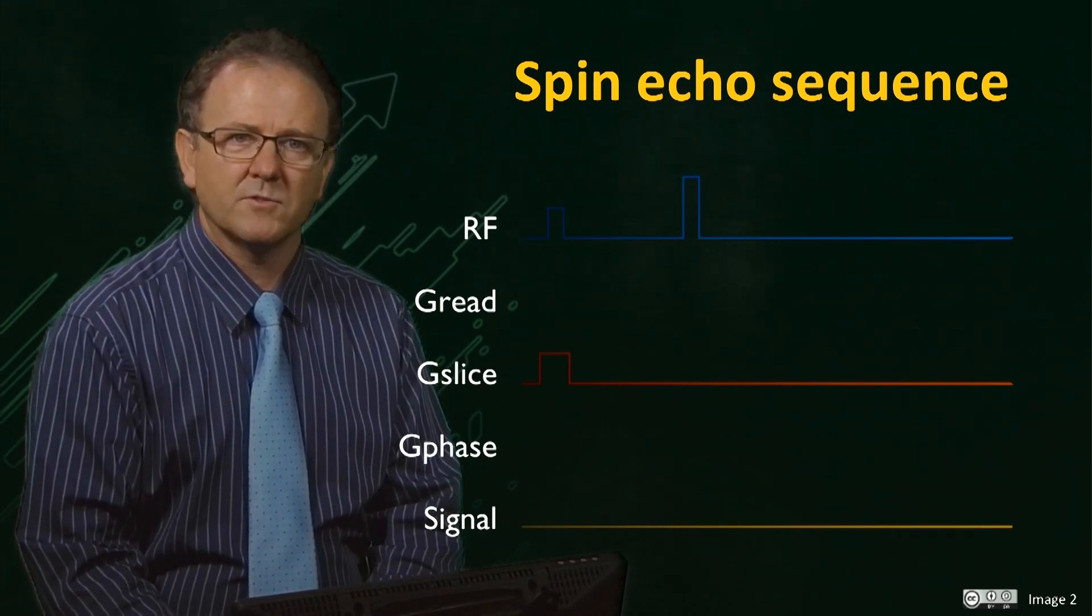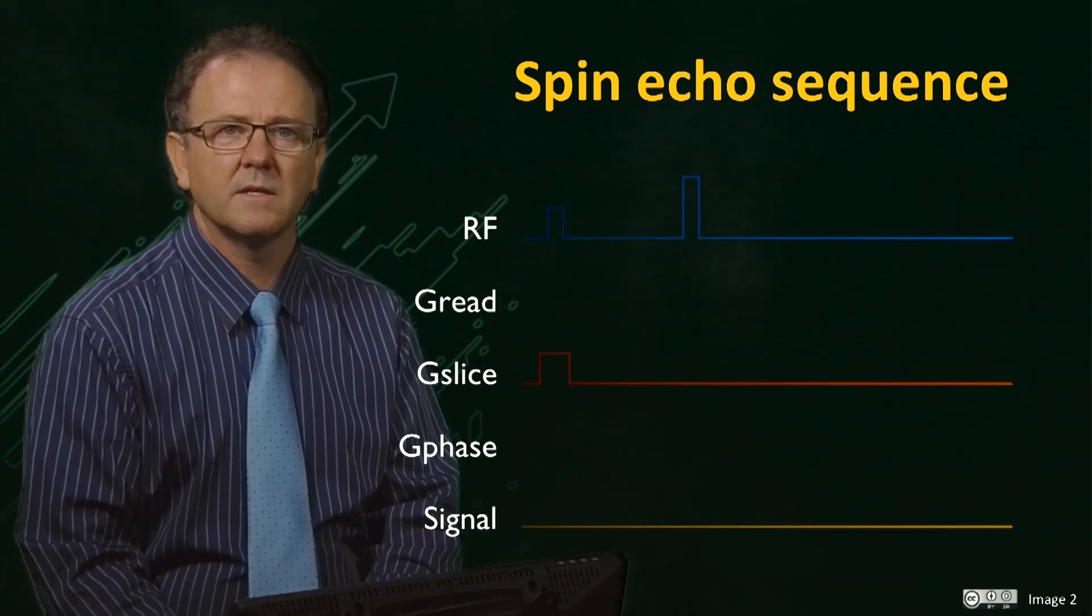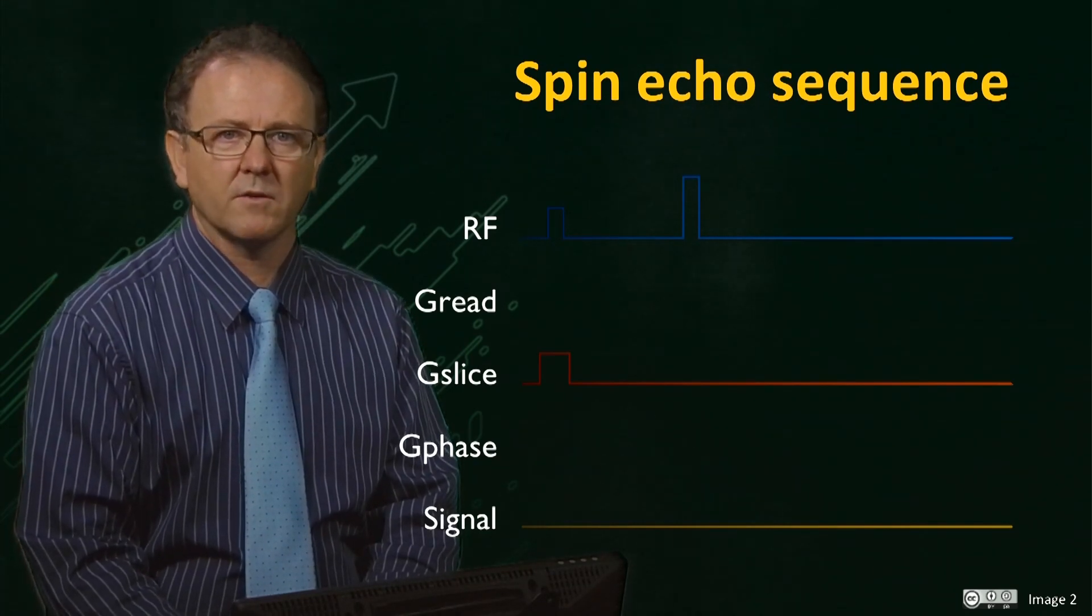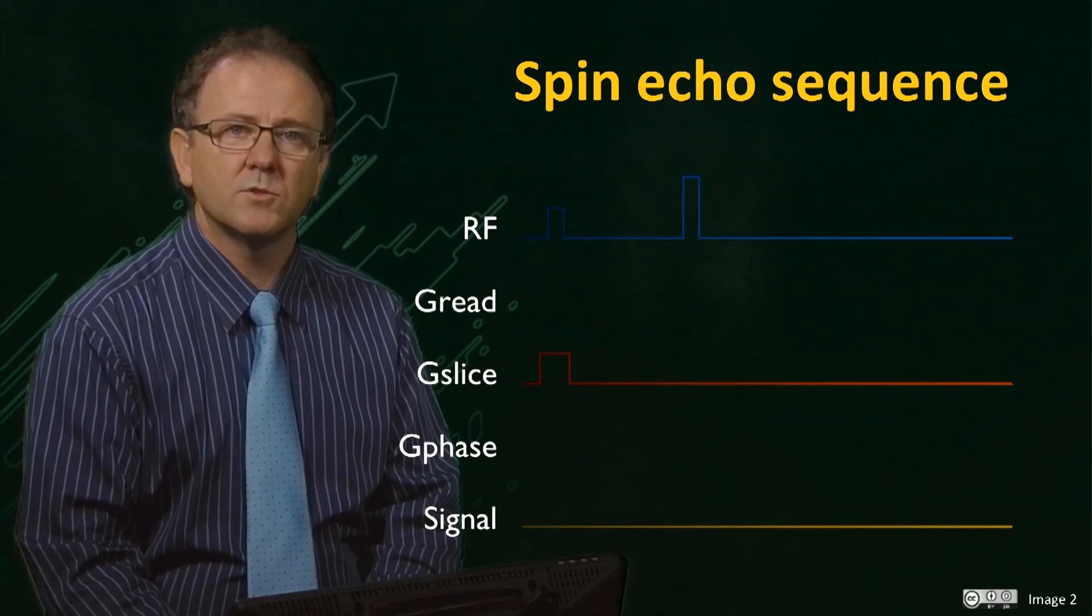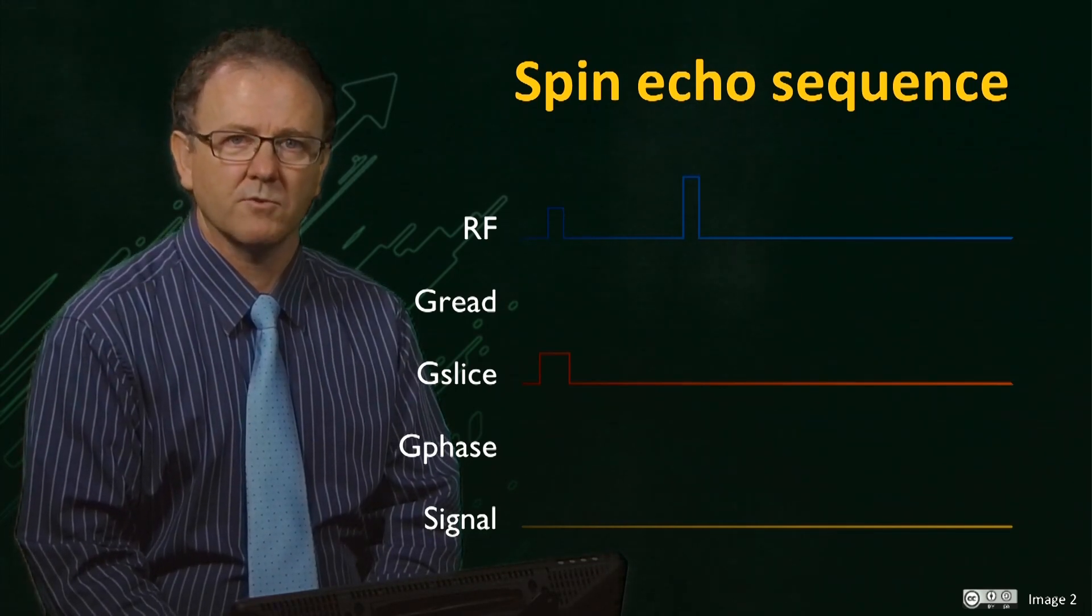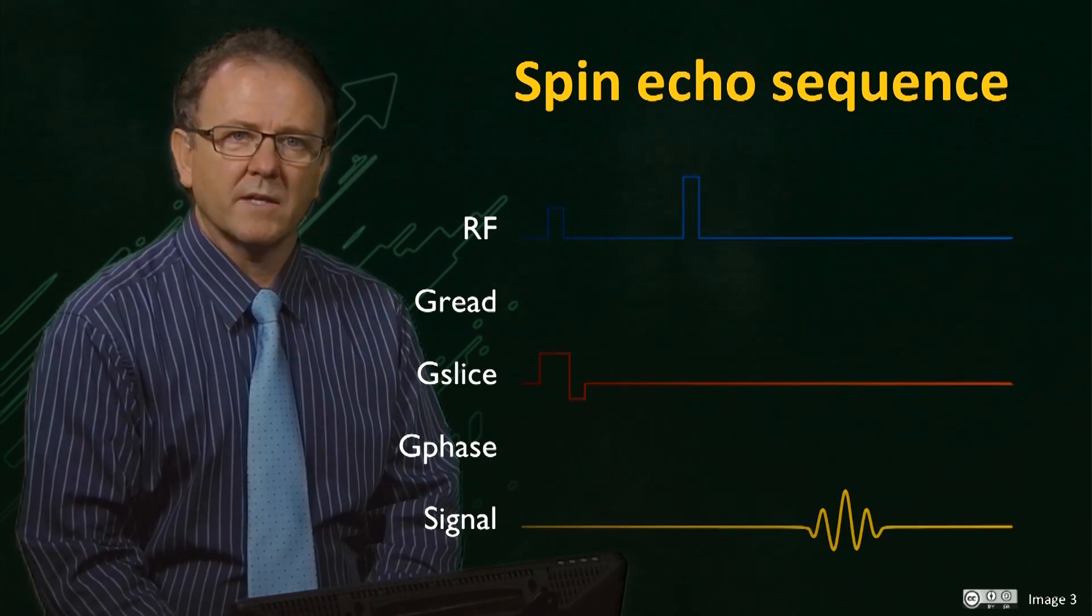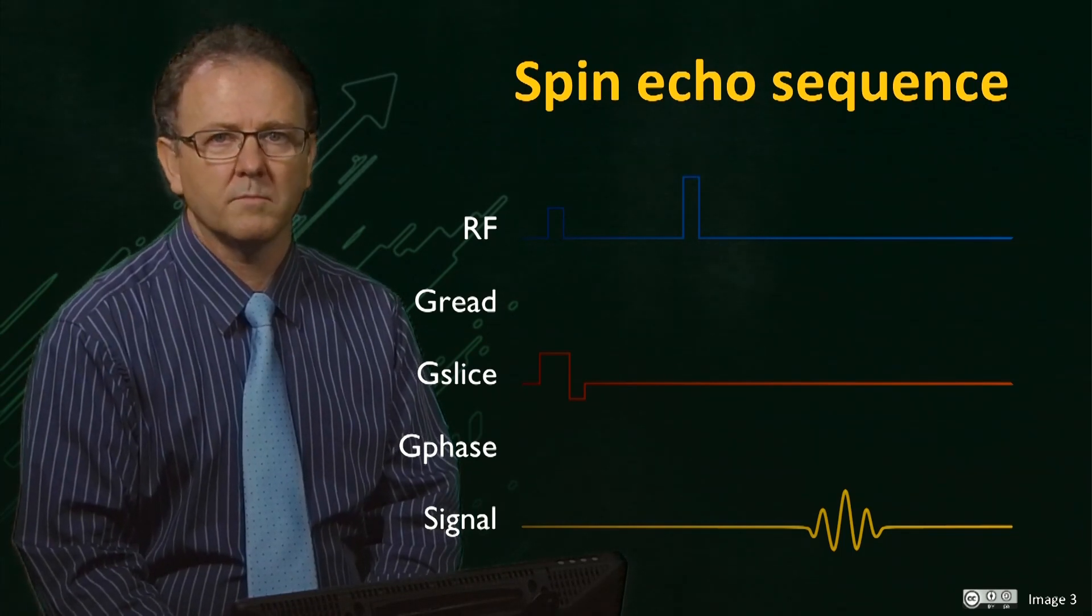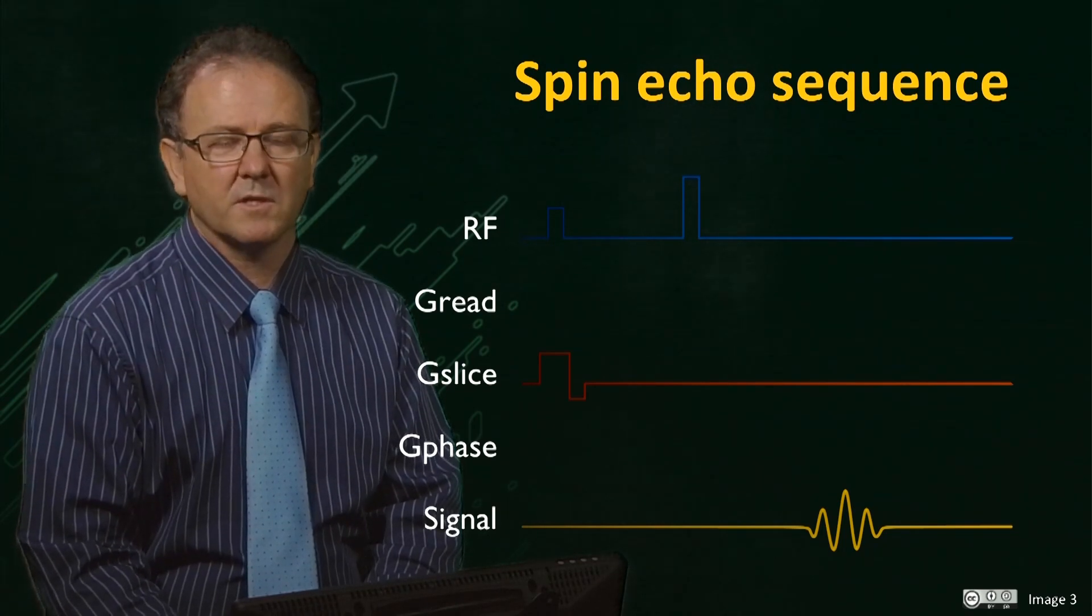To recover the transverse magnetisation within the slice that has dephased due to the slice gradient, it is necessary to reverse the dephasing by applying a gradient of opposite sign or polarity for a period equal to the dephasing portion of the slice gradient. This causes the spin vectors to reverse their direction of precession and therefore rephase, and so an echo will form at time 2 tau. This signal arises only from the slice.